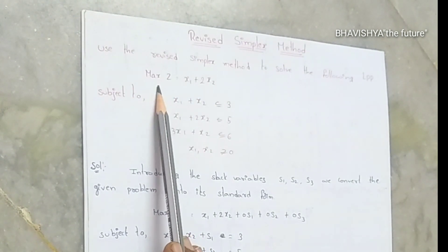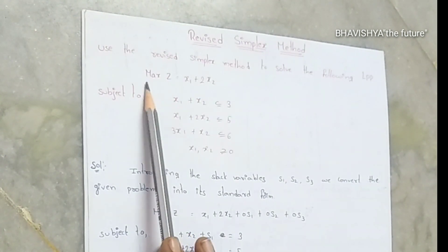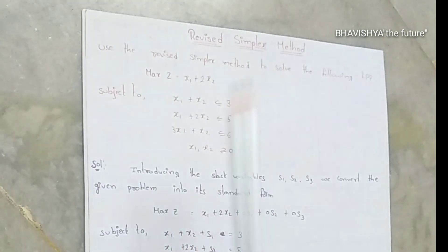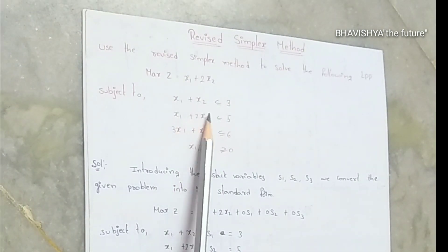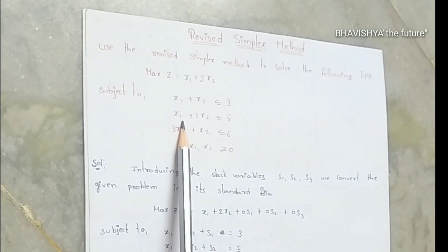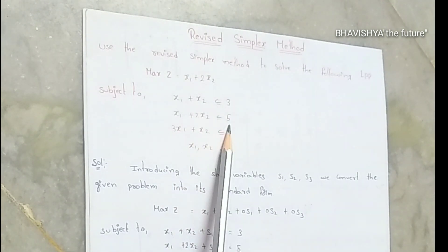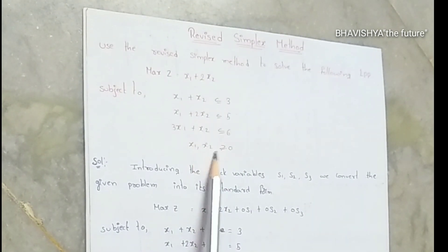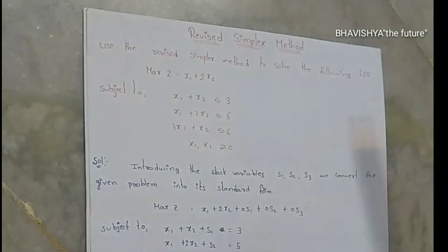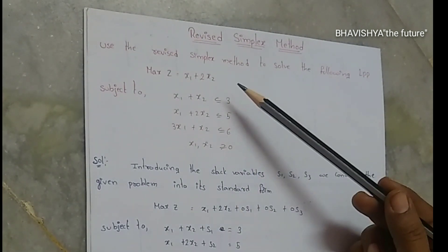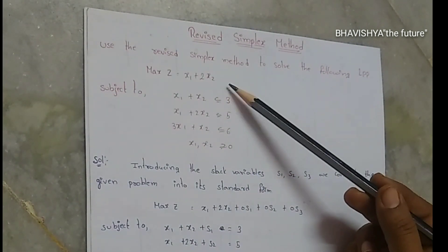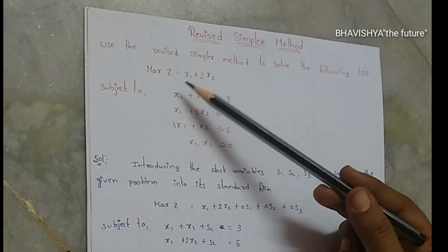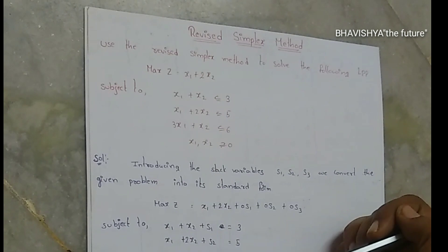The first problem is: maximize z = x1 + 2x2, subject to x1 + x2 ≤ 3, x1 + 2x2 ≤ 5, and 3x1 + x2 ≤ 6, where x1, x2 ≥ 0. The given problem is already in maximization form. If it were minimization, we would first convert it to maximization before starting the process.